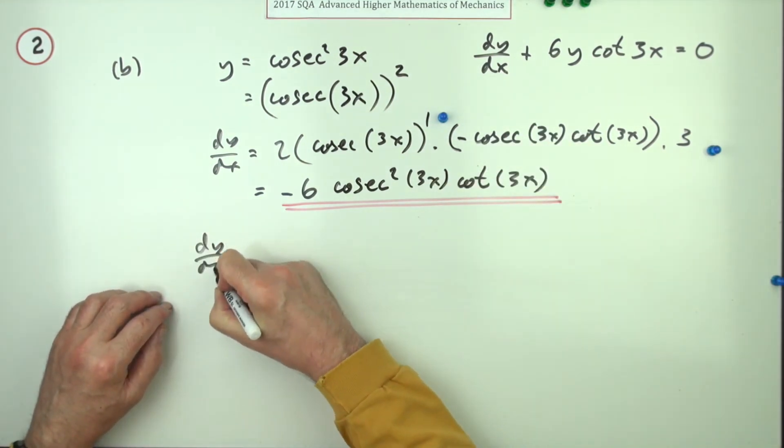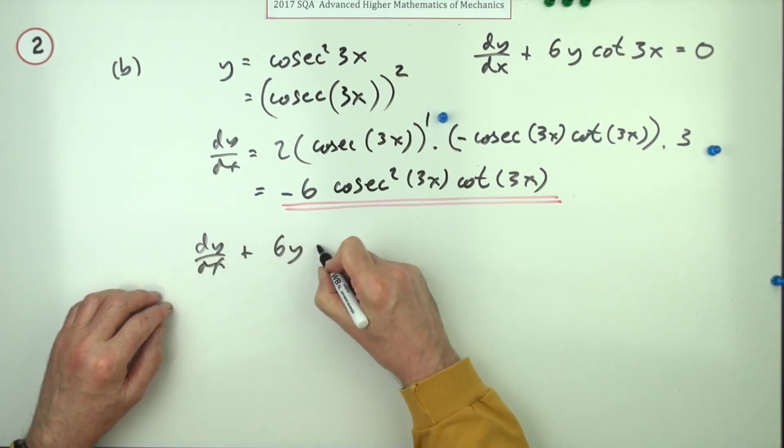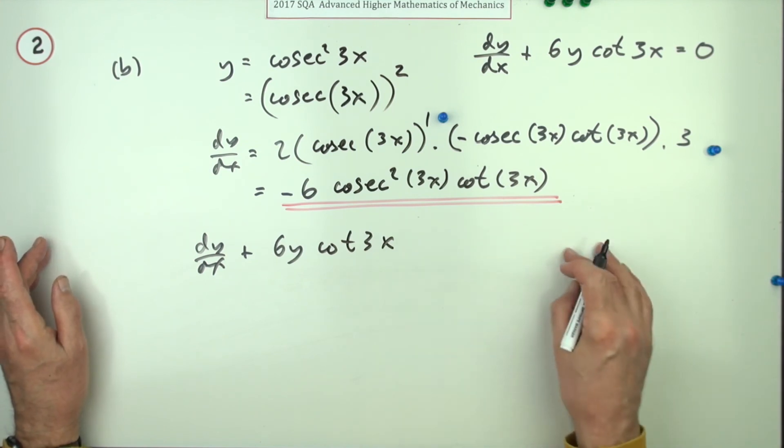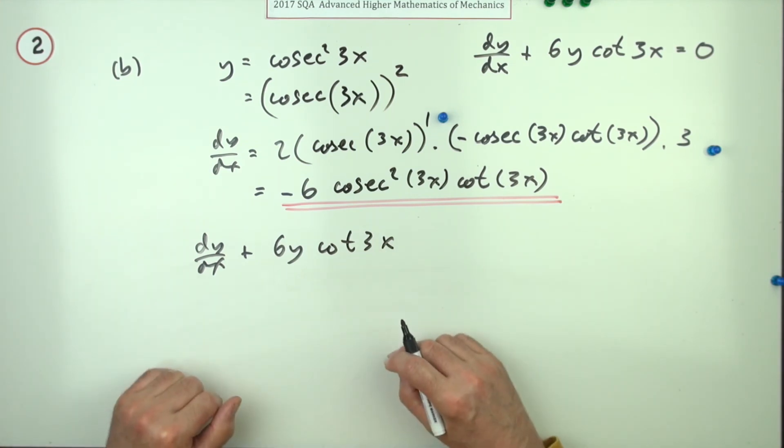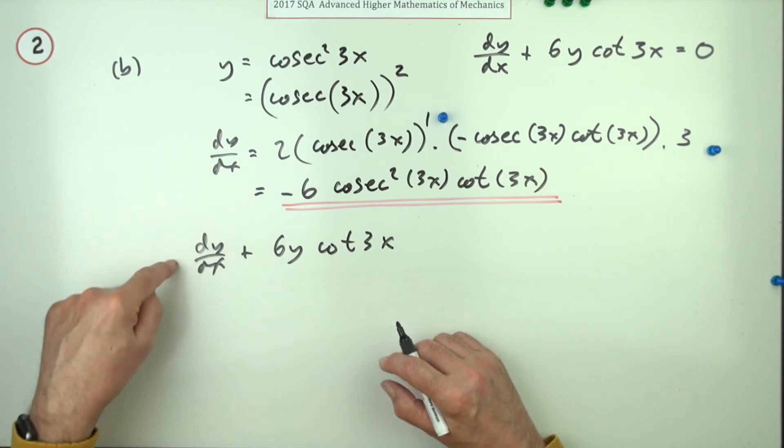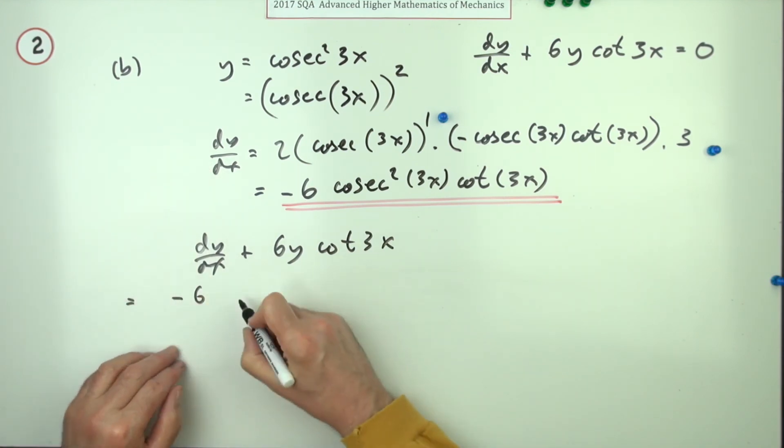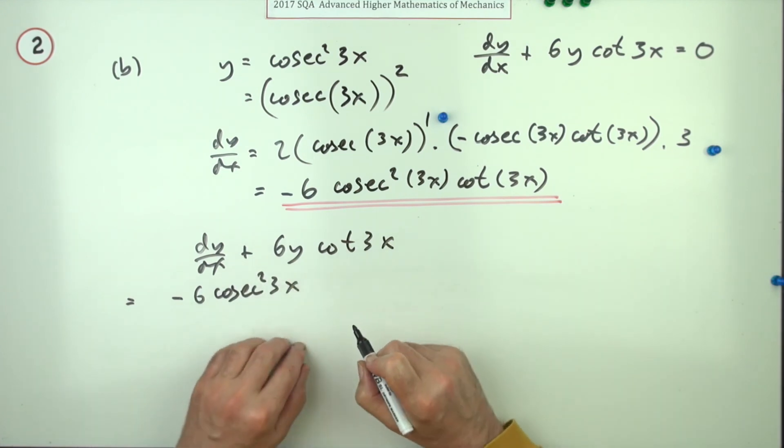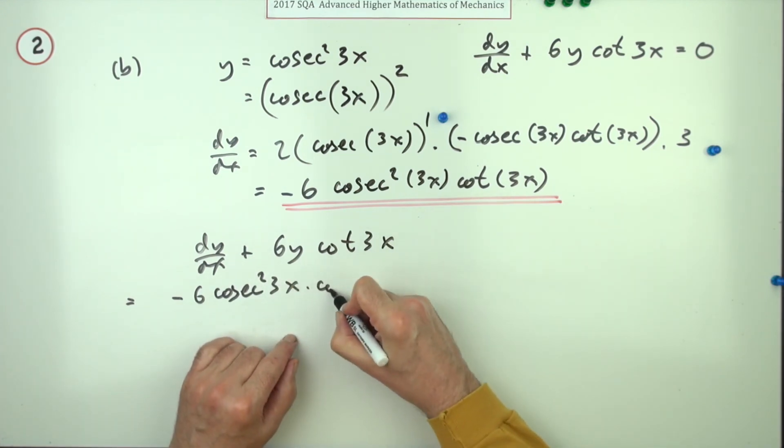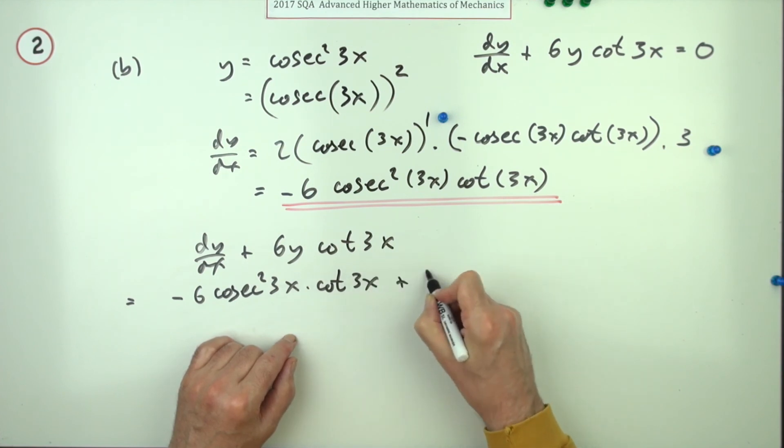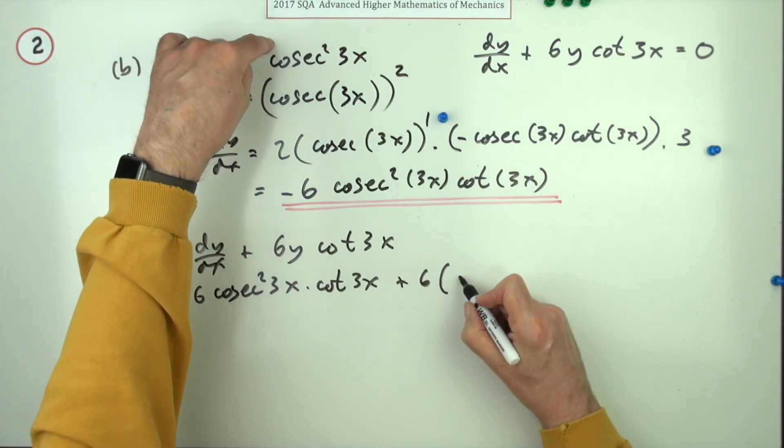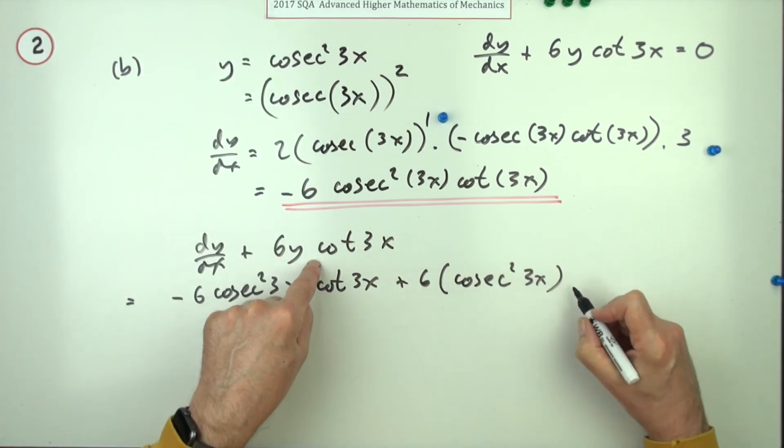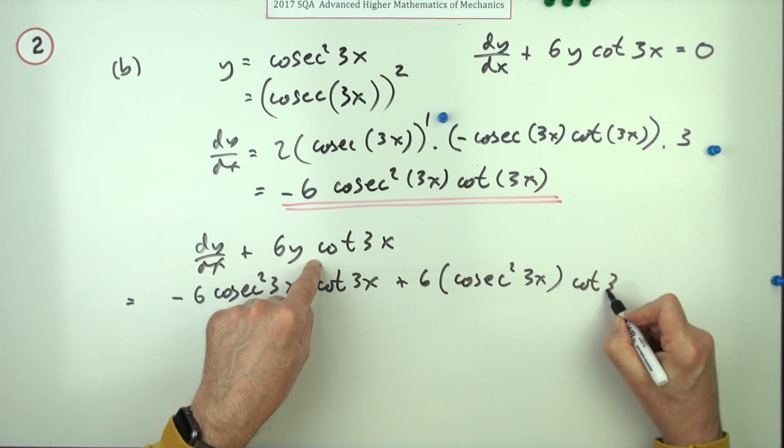Now this bit then, you have to show that dy by dx plus 6y cot 3x equals 0. I'll not beg the question by putting equals 0, I'll figure out where this comes to because I've got all the parts anyway. Here's dy by dx, that's negative, so that's equal to negative cosec squared, I'll just write it as 3x, times cot 3x, plus 6 times, and I'll show this substitution because y is up here, cosec squared 3x, but it then gets multiplied by cot 3x.